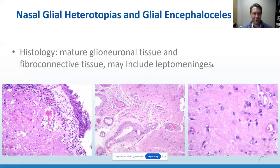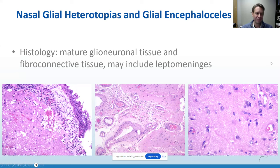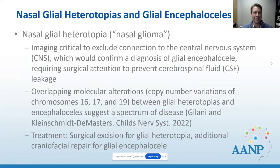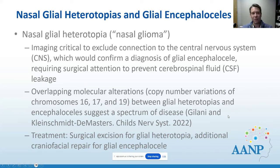ENT will come to neuropathology and ask whether this looks like brain. We might see leptomeningeal elements, vessels, neurons, and reactive astrocytes. The big thing for nasal glial heterotopias is we want to make sure there is no extension from the central nervous system, which would make it a glial encephalocele. Imaging and clinical information is important, and the surgical team will need to do additional work to ensure there isn't a CSF leak. Dr. Jelani and Dr. Kleinschmidt-DeMasters recently found overlapping molecular alterations between nasal glial heterotopias and glial encephaloceles, suggesting they may be on a spectrum.